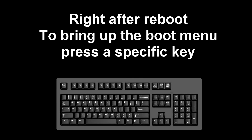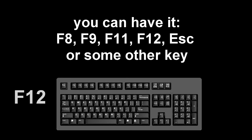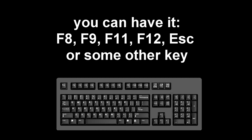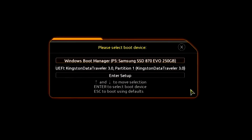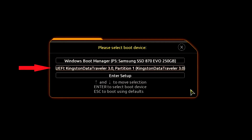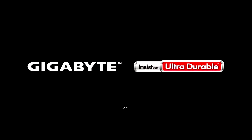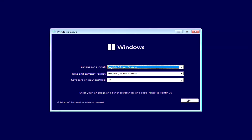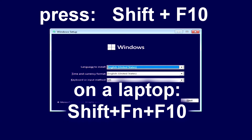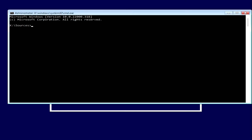Immediately after the start of the reboot, continuously press a certain key on the keyboard to bring up the boot menu. I press the F12 key — for you it could be F8, F9, F11, F12, or some other key. There is no single standard and different computers may have different keys to call the boot menu. Find the installation USB flash drive or DVD in the boot menu and press Enter. The Windows installation menu will open, but we will not install anything — just press Shift and F10 at the same time, and the command line immediately opens.